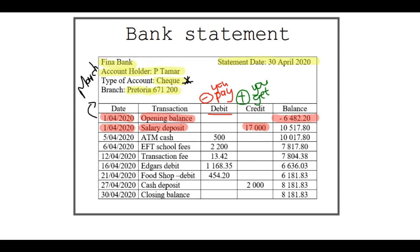Now he has 10,517 in his bank account. He started with negative 6,400 and then added 17,000, because it's a credit — you add credits — and you'll get this amount on your calculator.